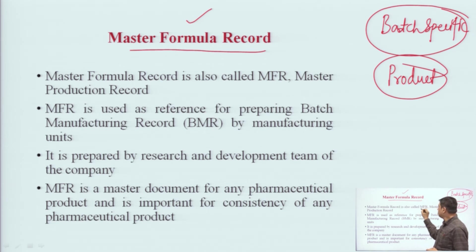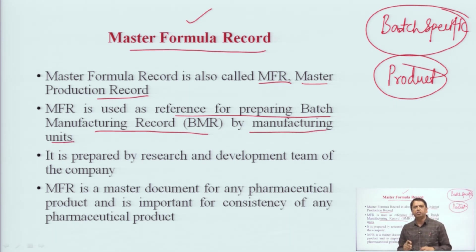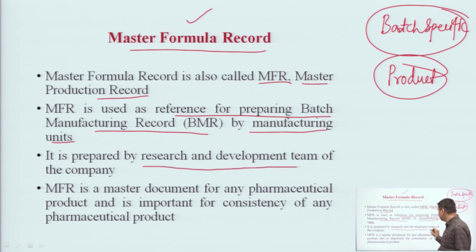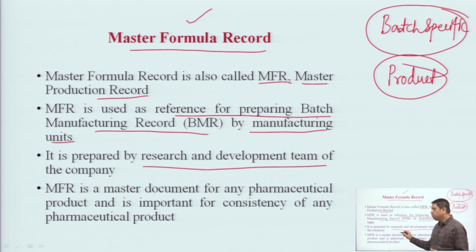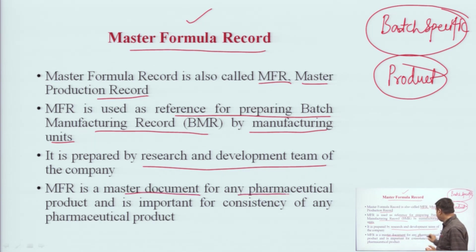Master Formula Record, also called MFR or Master Production Record, is used as a reference for preparing the Batch Manufacturing Record by manufacturing units. It is prepared by the Research and Development team — obviously before batches start being made. The R&D team prepares it through full research: what process is used, what will happen, and after properly verifying everything, the Master Formula Record is prepared. MFR is a master production document of any pharmaceutical product and is important for the consistency of any pharmaceutical product.